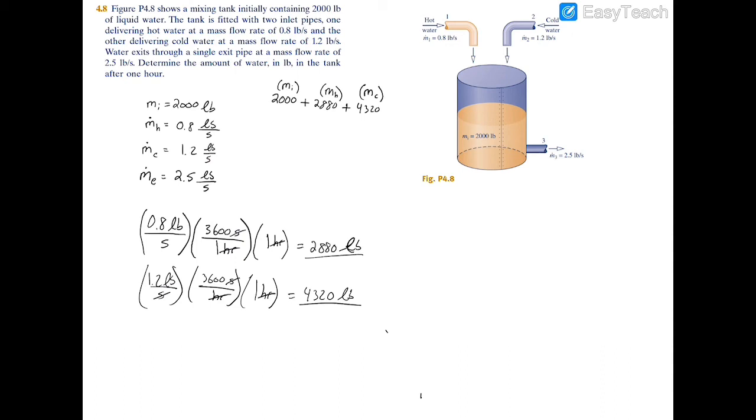And now I see what's coming out over here is the m_e, which is going to be 2.5 pounds per second, 3600 seconds per hour, times one hour. Cross them out again and you're going to be left with 9000 pounds.